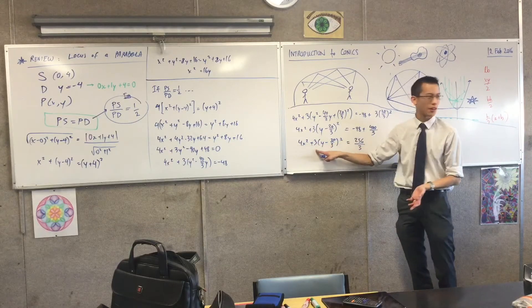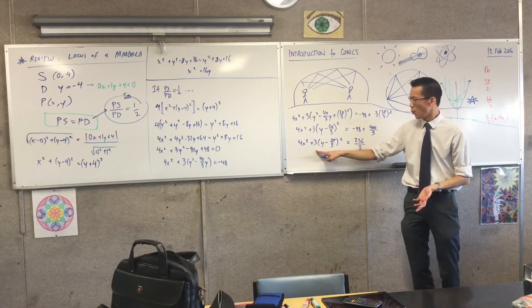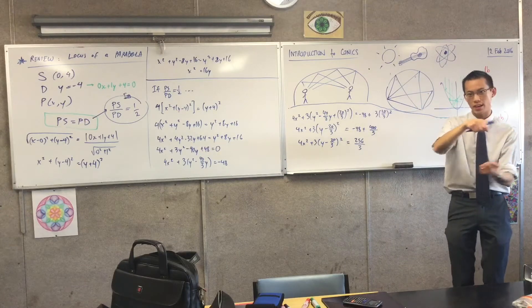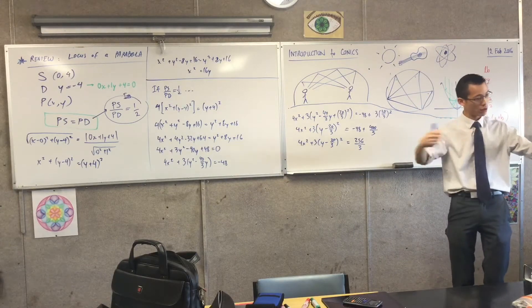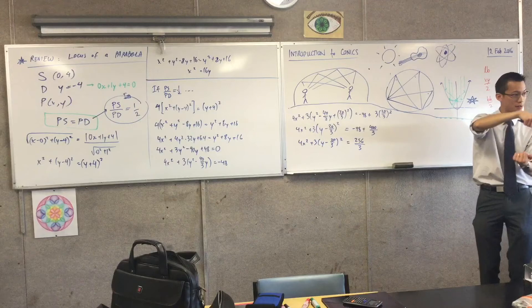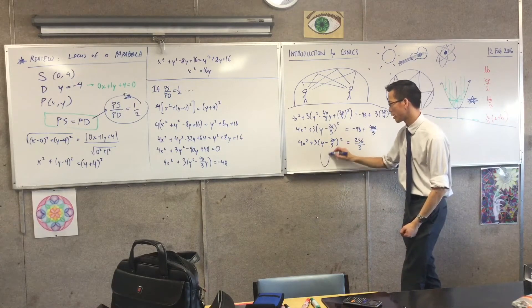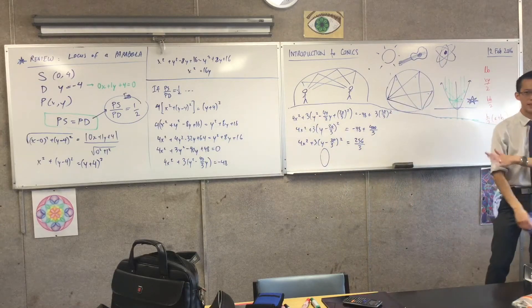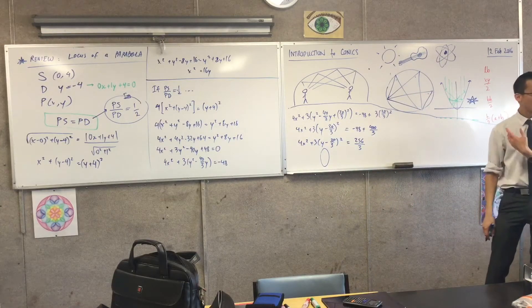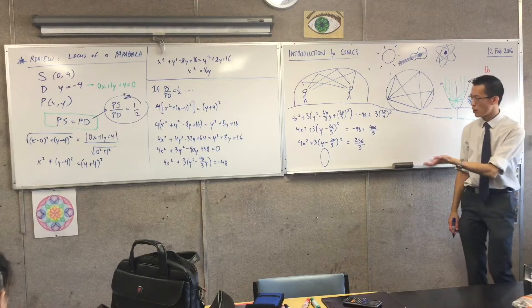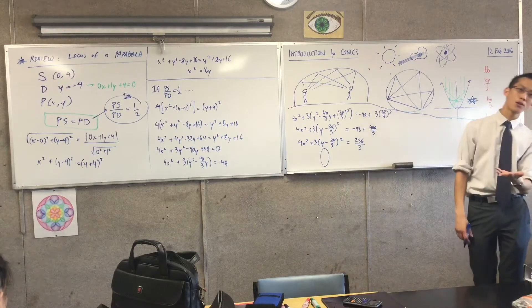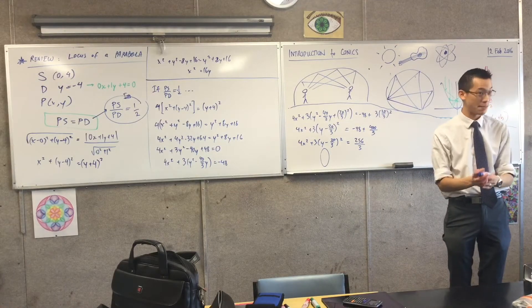But because you have a 4 and a 3, what's happening is you're squeezing and you're squashing, but you're doing the horizontal and the vertical by different amounts. In other words, what you get is something in this particular one, I think you'll get something kind of like this. Well, I'm exaggerating a little bit. In other words, the shape you have, you can either call it an oval or be technical and call it an ellipse.